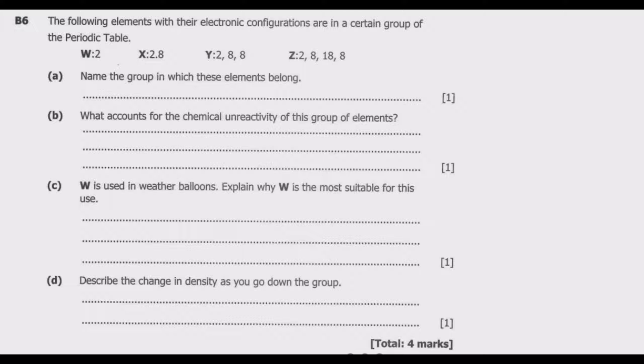Question B6: The following elements with their electronic configurations are in a certain group of the periodic table. We have W, X, Y, then Z.